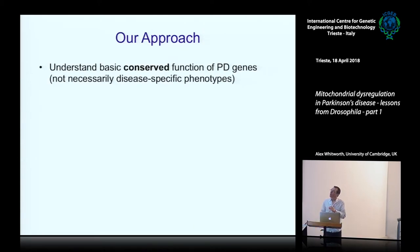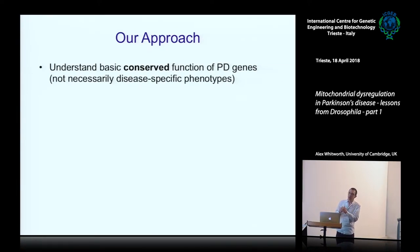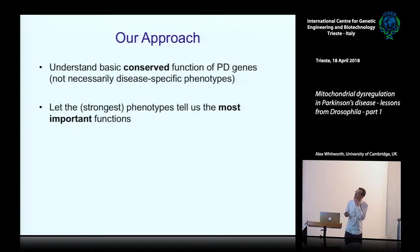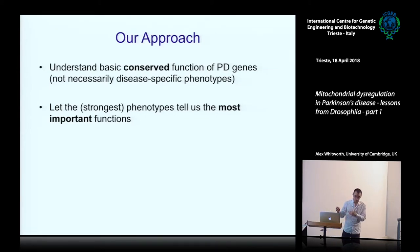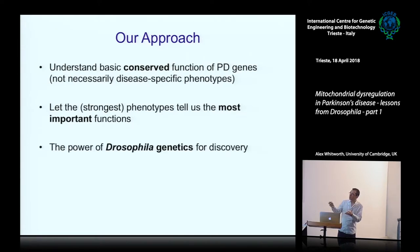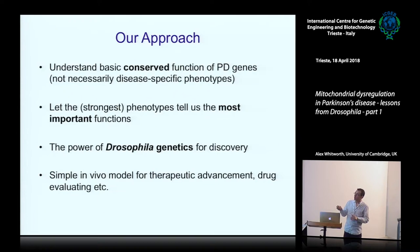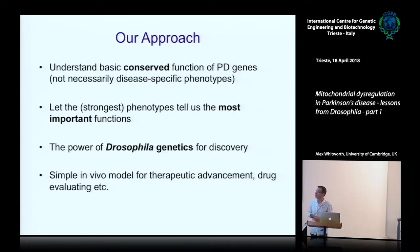The overarching ethos in my lab is we're trying to understand really the most basic and conserved function of genes linked to the disease. This doesn't have to specifically mirror the disease context - a lot of people in the field get hung up on this, that it needs to look like the human syndrome in a fly, but I think that's stretching it a little too far. One of the ways we do this is letting the strongest phenotypes tell us what are the most important functions of the gene, and we use the power of fly genetics for discovery.